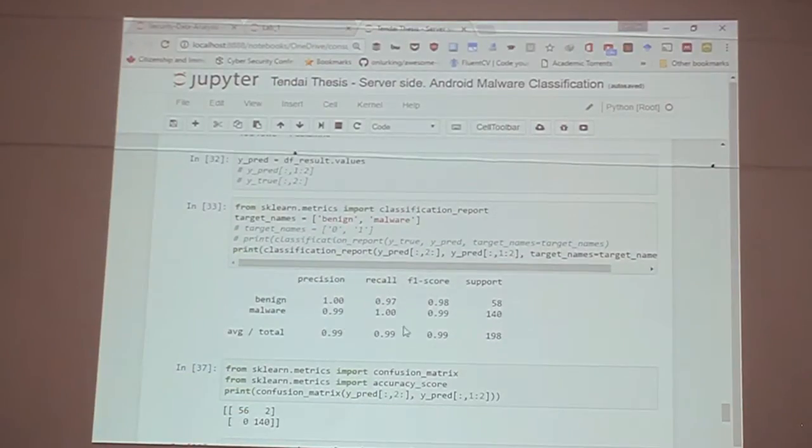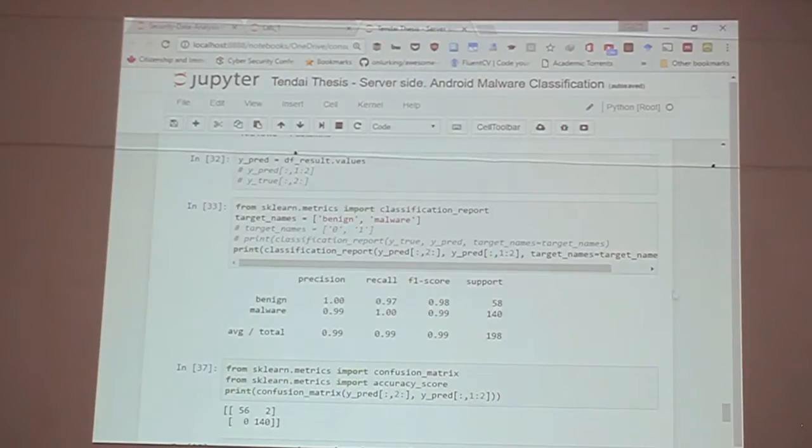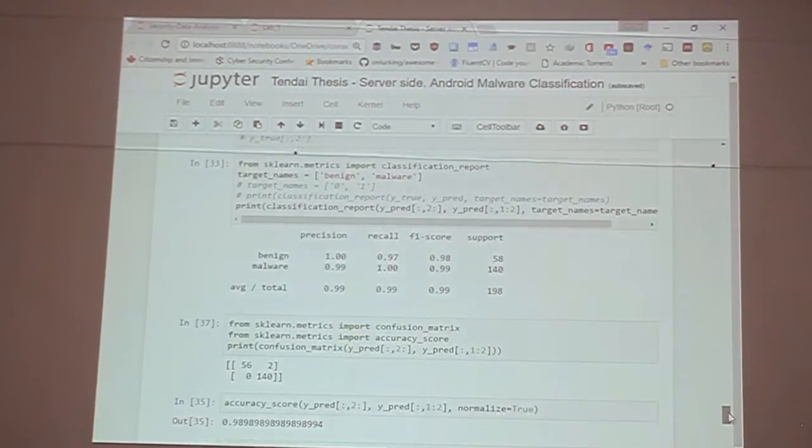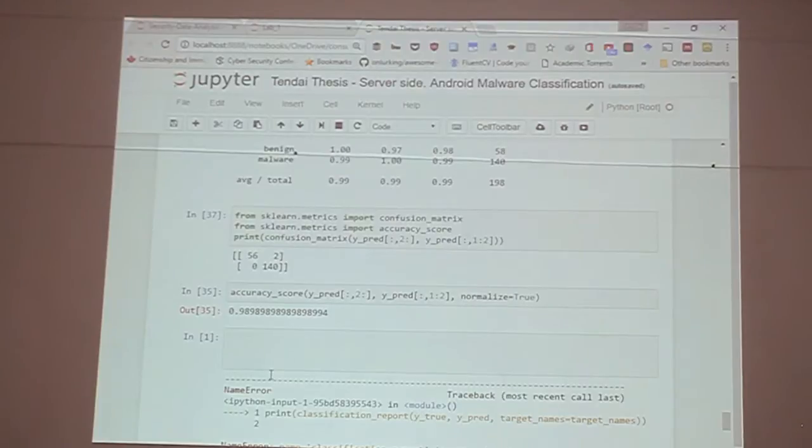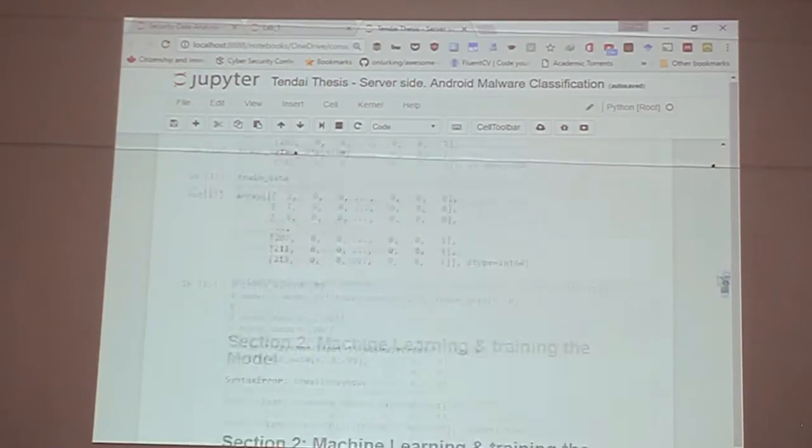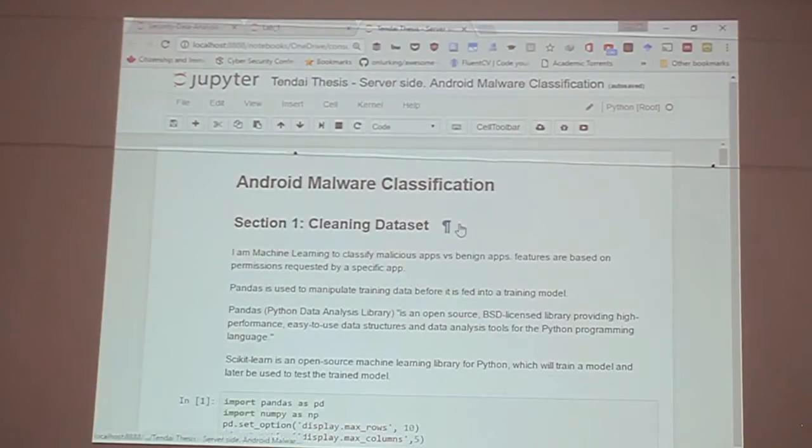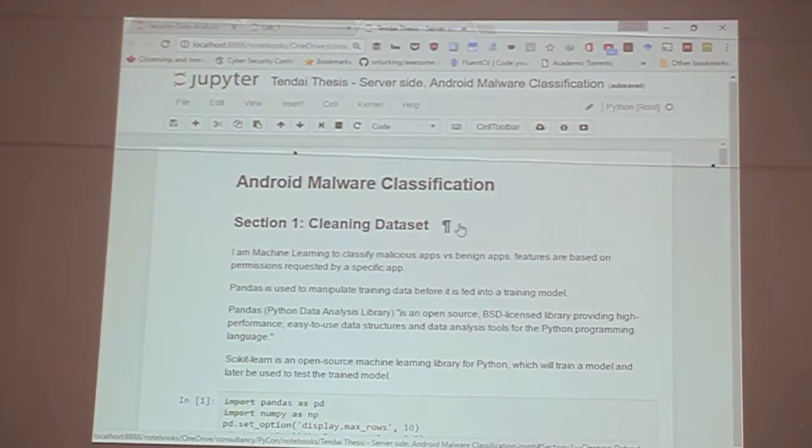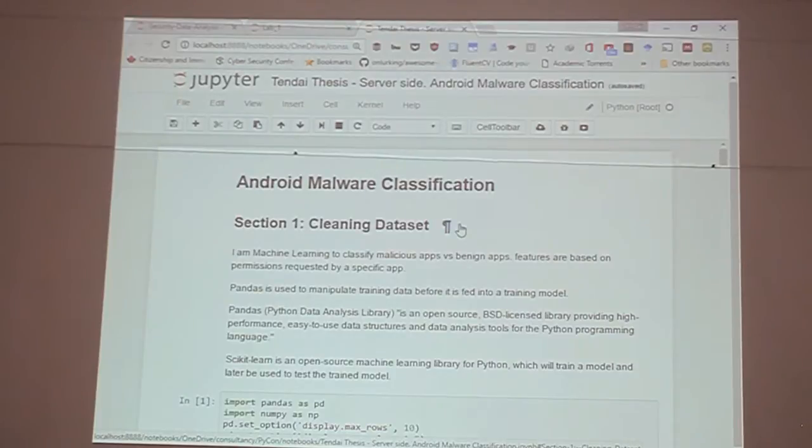And then we have our recall, our precision, and our F1 score. You can also have your confusion matrix. You can have your accuracy score. And you can save it like this. And all you need is the data. You can give it to someone else and they can use it for their research.